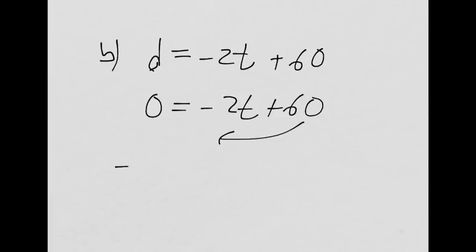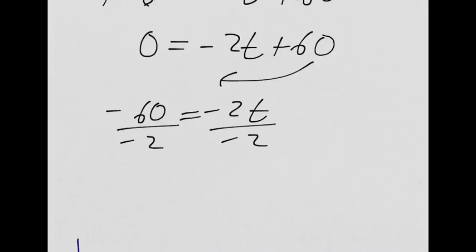Bring the 60 over. Divide by negative 2. Let's see if Joel's right. Negative 60 divided by negative 2. Oh, man. Got it. Nice. Now, here's the crazy thing.